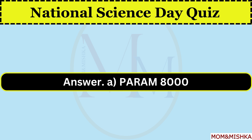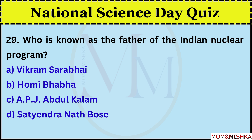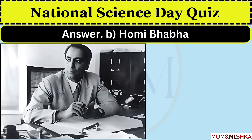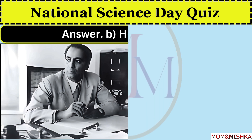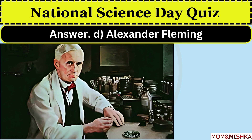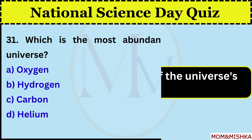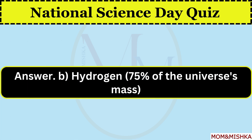What is India's first supercomputer? PARAM 8000. Who is known as the Father of the Indian Nuclear Program? Homi Bhabha. Which scientist is credited with discovering Penicillin? Alexander Fleming. Which is the most abundant element in the universe? Hydrogen, comprising 75% of the universe's mass.